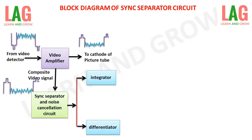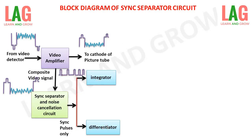The obtained pulse is applied at the input to the integrator and also to the input of the differentiator circuit. The remaining video signal is applied to the picture tube for picture information. The top 25% of the synchronizing pulse is separated from the composite video signal and applied to both the integrator and the differentiator.